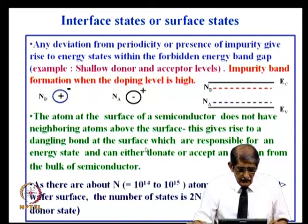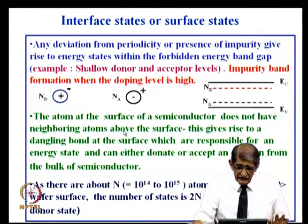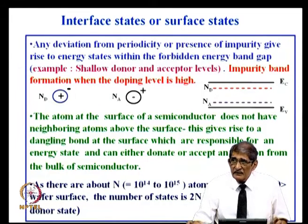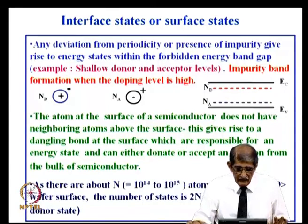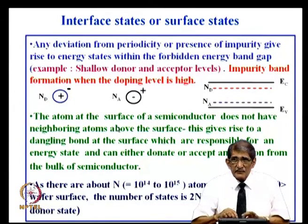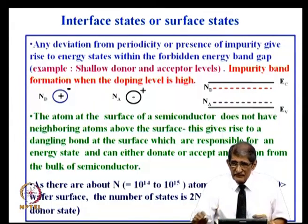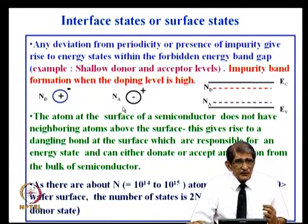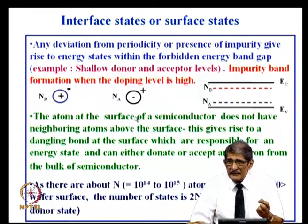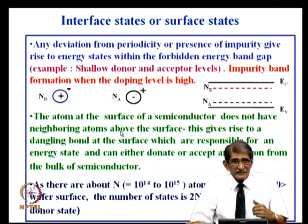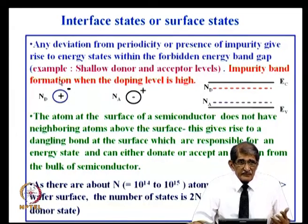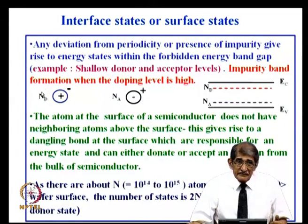These are shallow donors and shallow acceptors, implying very small energies are required. Now, if you take a surface — the bulk is here, the surface is here — a silicon atom on the surface does not have neighboring atoms. Usually in the bulk, the silicon atom is surrounded by 4 neighboring atoms so all bonds are continuous. The atom on the surface has 2 on the side and 2 below — there is no atom on top. So there is an electron not completely forming a bond, and it is possible to knock out that electron and make it available for conduction. That means a silicon atom on the surface can act as a donor if it donates an electron.